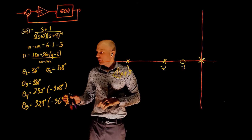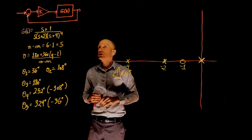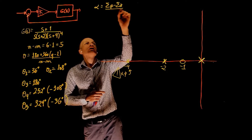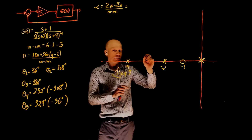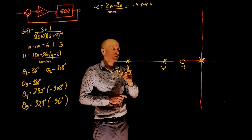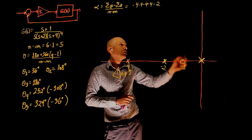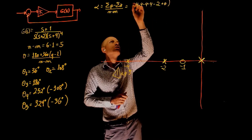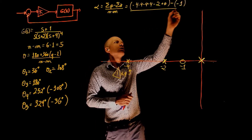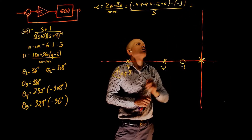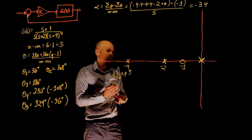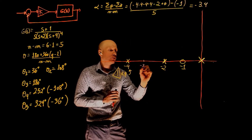We now have five asymptotes, so let's calculate the centroid. The centroid is the sum of poles minus the sum of zeros, divided by n minus m. In this case, the sum of poles is negative 4 minus 4 minus 4 minus 4 minus 2 plus 0, minus the sum of zeros which is simply negative 1, all divided by 5. This gives the centroid of the asymptote at negative 3.4.